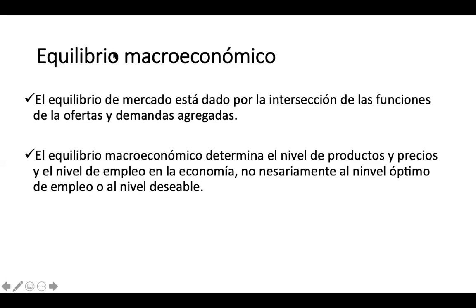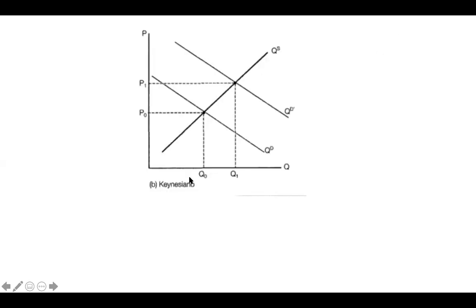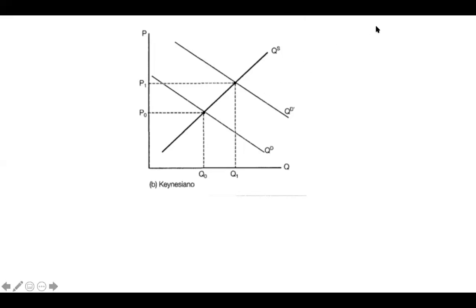Continuamos. En el equilibrio macroeconómico, en el modelo keynesiano, la función de demanda tiene esta forma y la oferta tiene pendiente positiva. Aquí tenemos un shock positivo que ha hecho crecer a la demanda agregada. ¿Por qué razón podría incrementarse esta demanda agregada? Si se aumenta el consumo, el gasto o la inversión, cualquiera de esos entes, también aumentaría la demanda agregada. ¿Y bajo qué políticas macroeconómicas podría generarse un incremento en la demanda agregada?